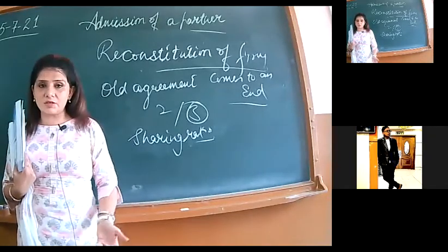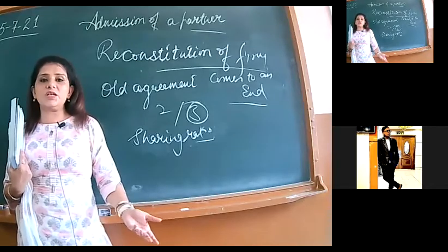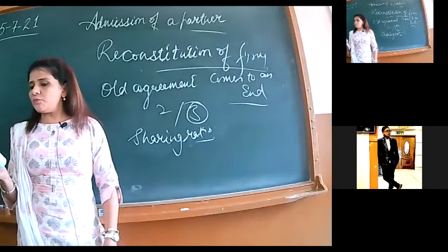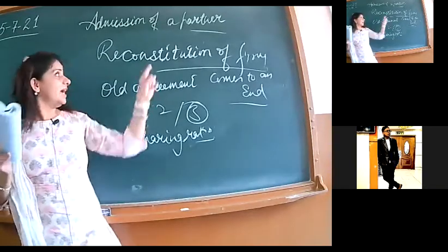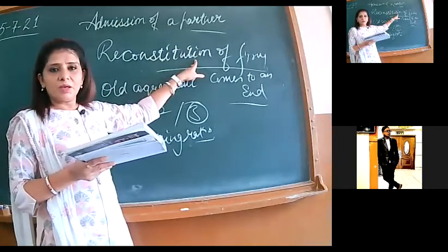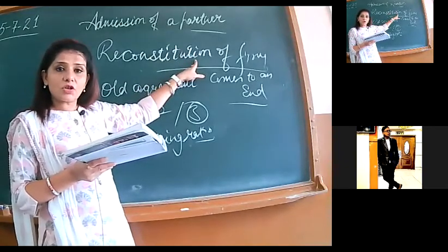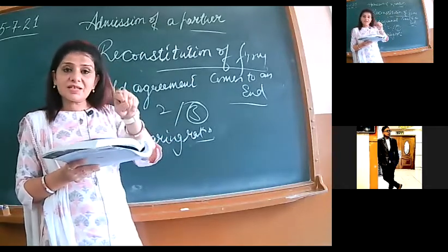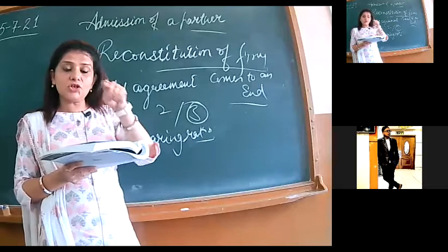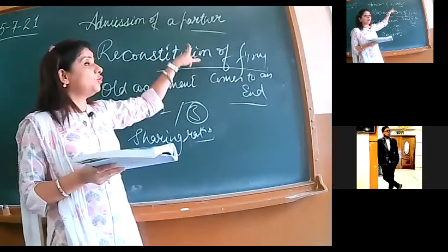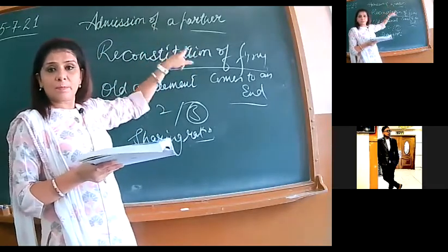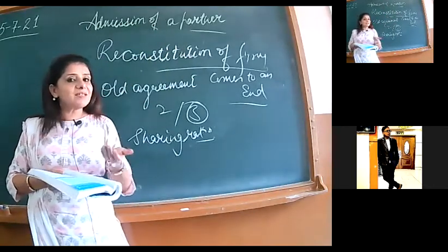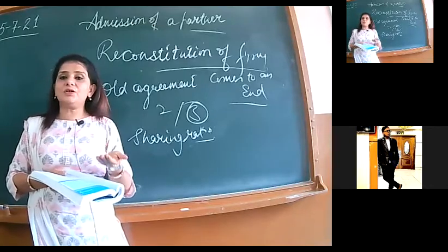Let's see the first page of your book. When the paper comes in MCQs, even if the paper comes in subjective type, we need to read each and every line given in the book so that we don't have to skip it. What does admission of a partner mean? In the first line, admission of a partner is a reconstitution of firm. Because the previous agreement is finished, there is a new agreement. He wrote, existing agreement ends, and new agreement among all the partners, including the new one, comes into existence.